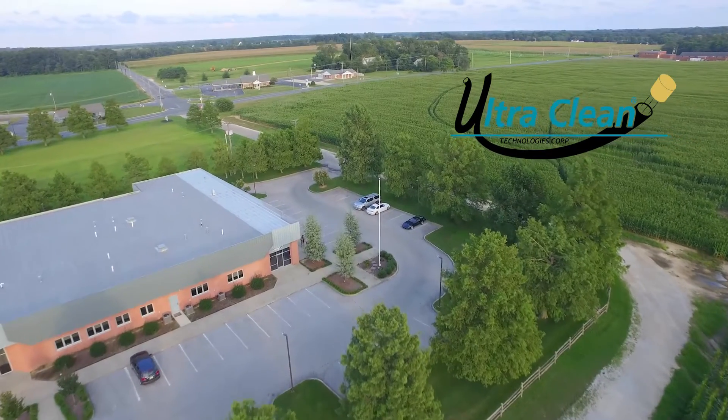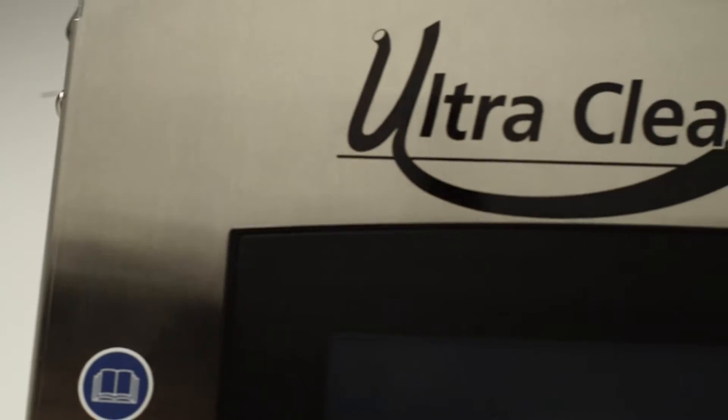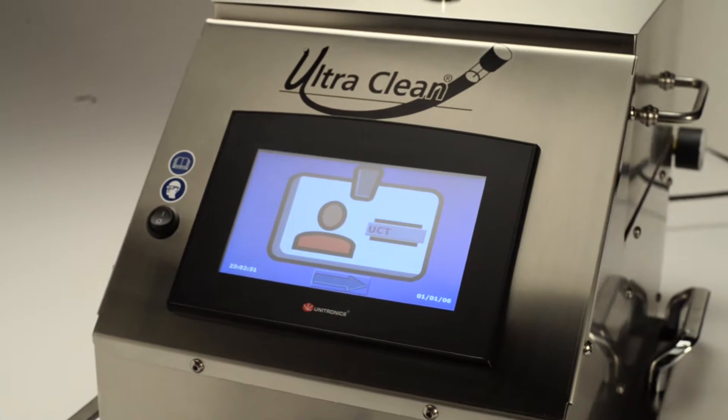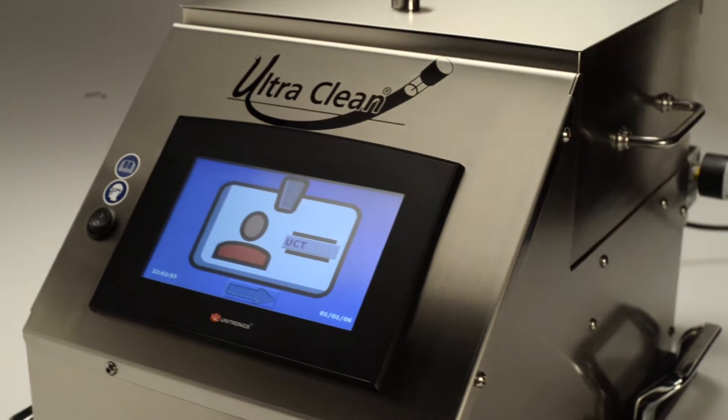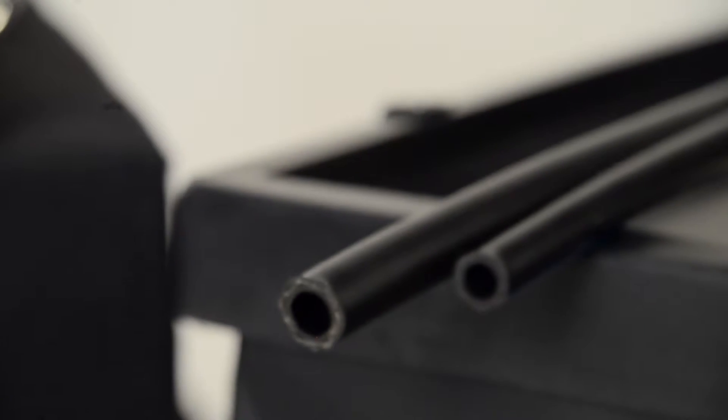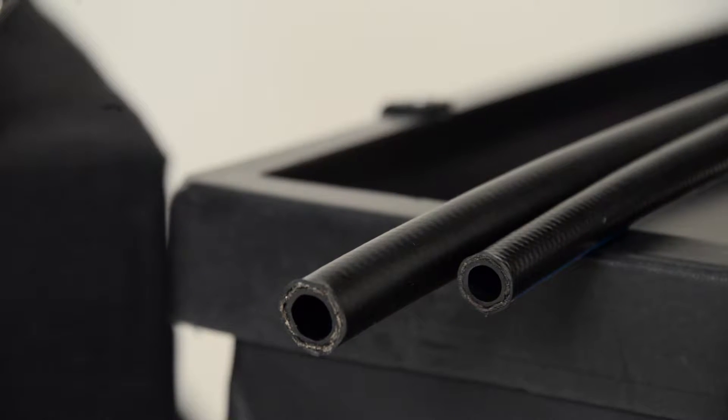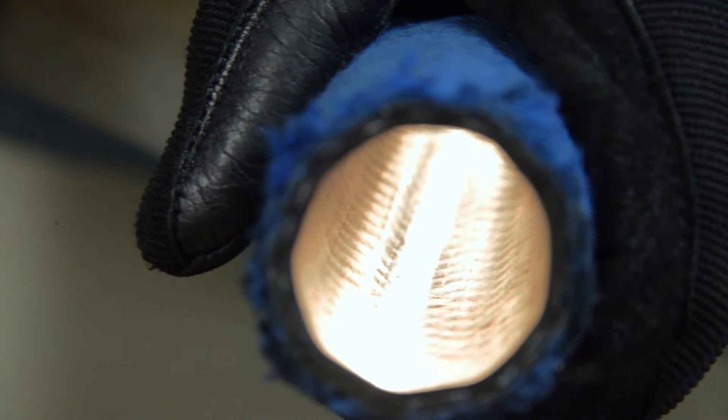UltraClean Technologies has introduced the Carousel Auto Loader to streamline the cleaning process and keep operators' target production goals on track. It covers the common range of assembly sizes from quarter-inch, or 6mm, through one-inch, or 25mm.